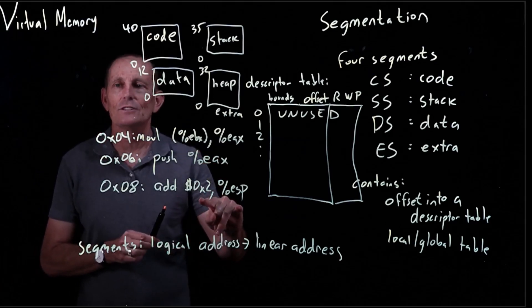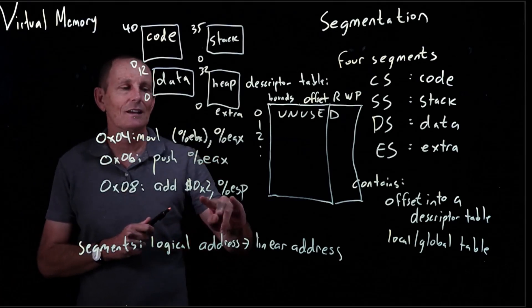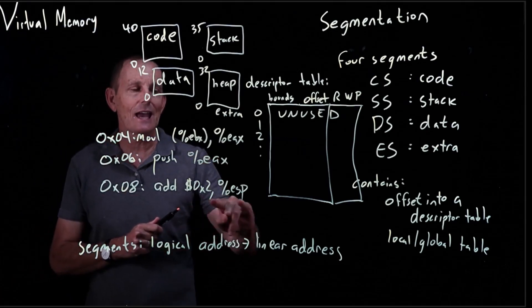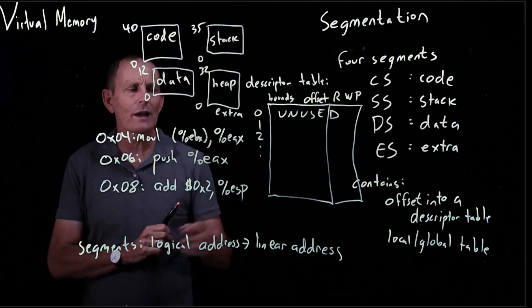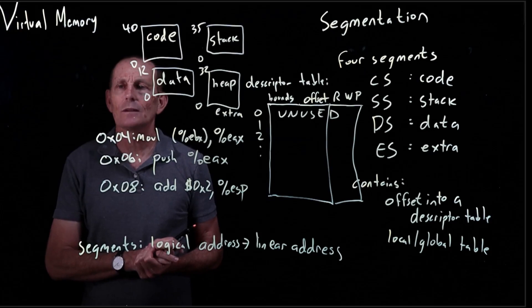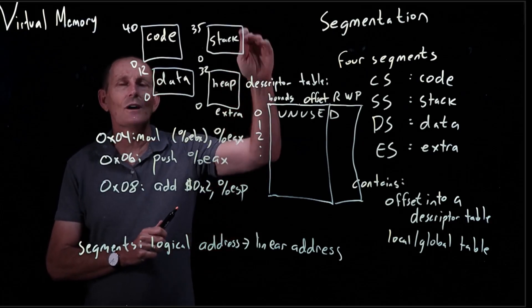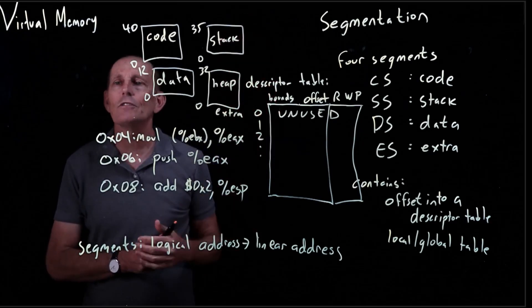And then this will do the same way, so fetching the instruction will use the code segment. In this case, adding to ESP—does this require us to do anything with the stack segment? And the answer is no, because we're just changing ESP. So ESP is going to be this number, presumably between 0 and 35.